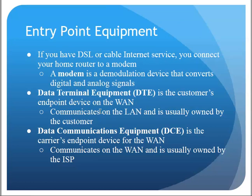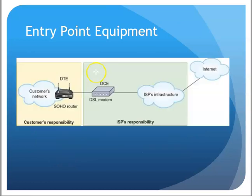The DCE, or Data Communications Equipment, is the carrier's endpoint device for the WAN and is typically owned by the ISP. In a home setup, the router inside the house and all its cabling is owned by you, while the modem the provider supplies to connect to their network is their responsibility — theirs to replace and upgrade. That dividing line between your equipment and theirs is the boundary between DTE and DCE.